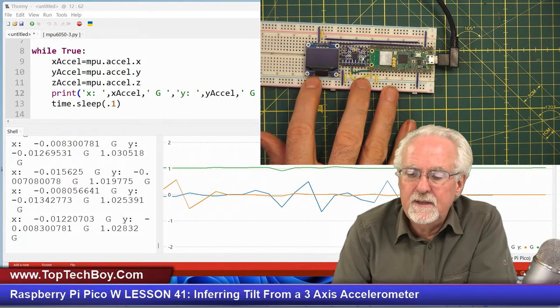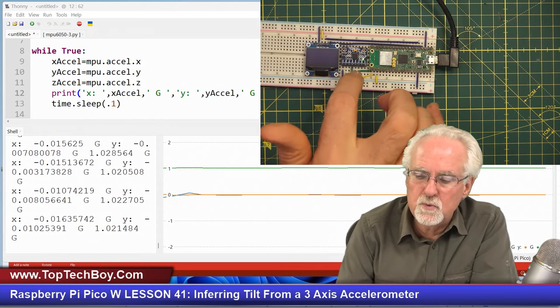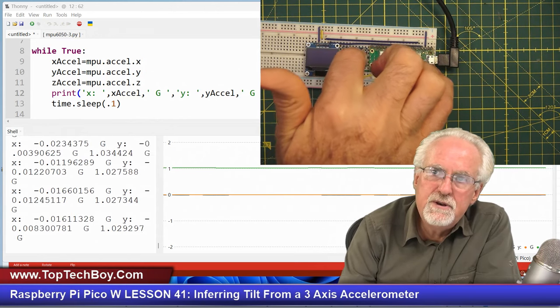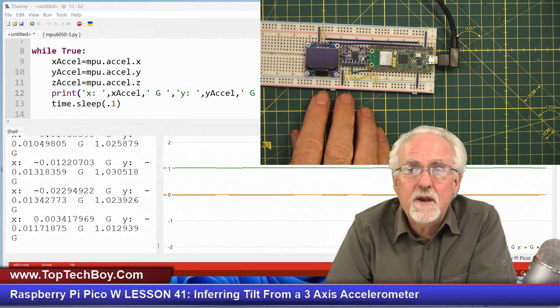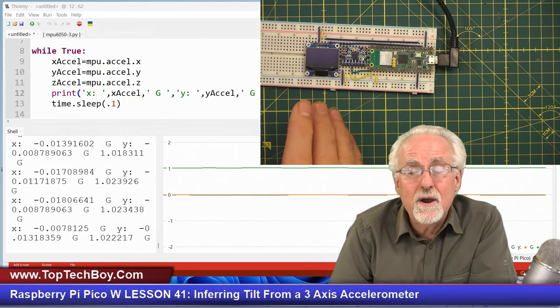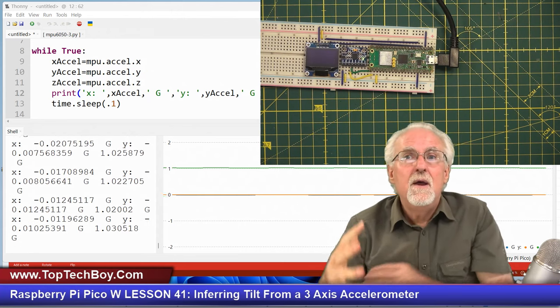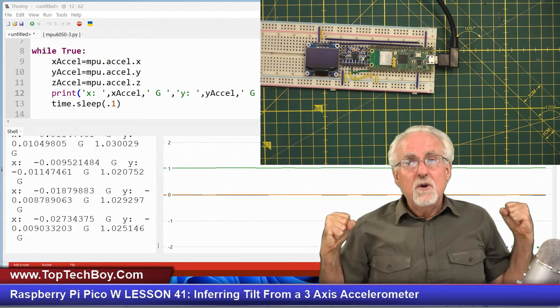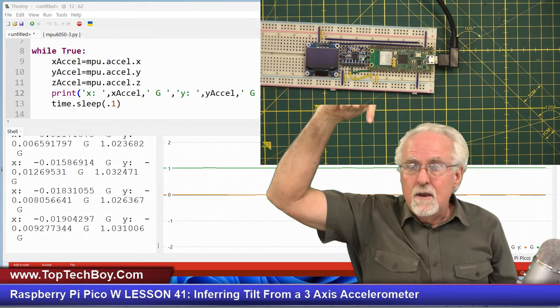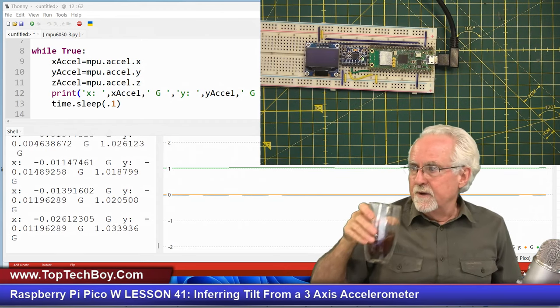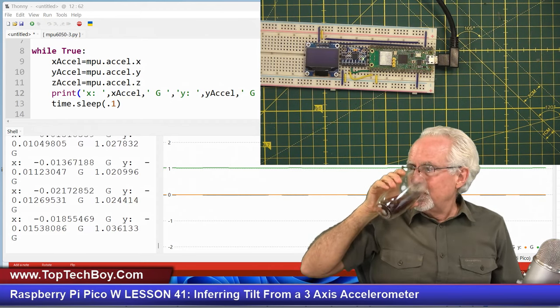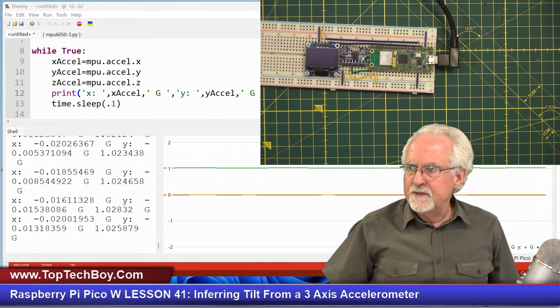This is behaving like we would expect if we just remember there is a one g gravitational vector coming down. That's why we're not floating around the room. That's why we are firmly affixed to the floor - because we are experiencing one g of acceleration towards the center of the earth.